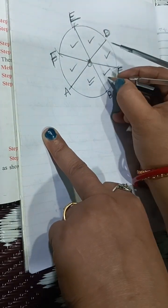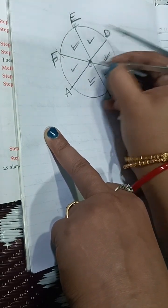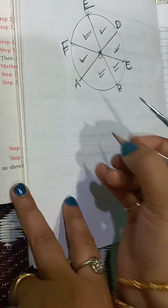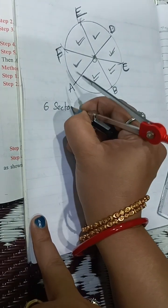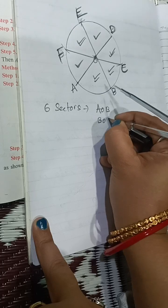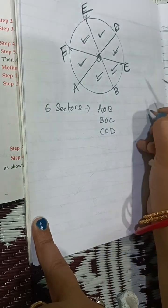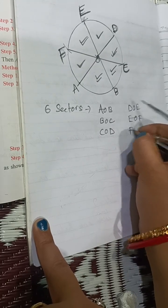The six sectors are AOB, BOC, COD, DOE, EOF, and FOA. These are the 6 circular regions of the circle divided into 6 equal sectors: AOB, BOC, COD, DOE, EOF, and FOA.